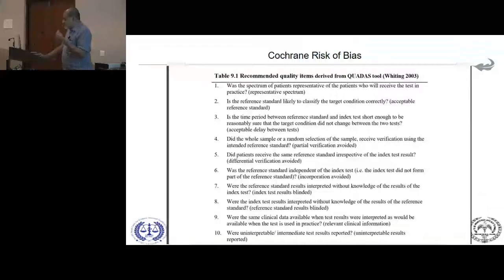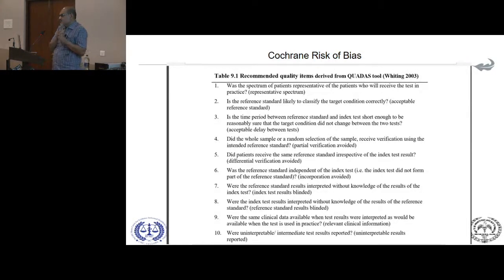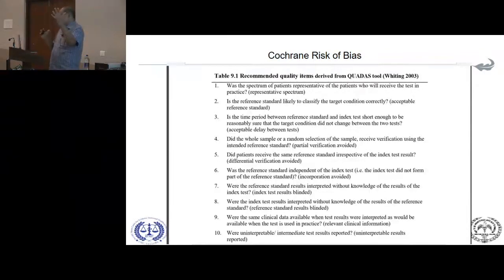What do we mean by spectrum bias? For example, if your test was designed for early stages of disease but your sample consists of those in the late stages, that's spectrum bias. When doing critical appraisal and quality assessment, you're essentially looking for risk of bias — which means that because of systematic issues in the methods, your results are altered in a way that cannot be trusted.